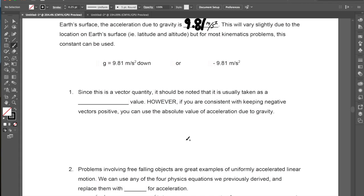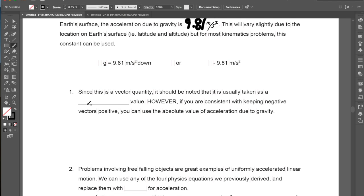A couple things to know before we move forward. First of all, since this is a vector quantity, we should note that it's taken usually as a negative value. Because it is accelerating towards the Earth in a downwards direction towards the ground, we usually think about acceleration due to gravity as negative 9.81 meters per second squared. However, if we're consistent with keeping negative vectors positive, we can use the absolute value of acceleration due to gravity to solve problems.